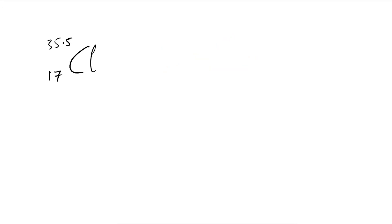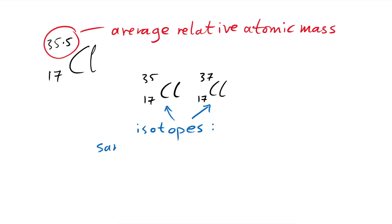The number on top, the mass number, actually gives you the average relative atomic mass. You see, there are some chlorine atoms that have a mass number of 35, but yet there are some chlorine atoms that have a mass number of 37. What are these? These are isotopes. Same element, that means the same number of protons, but different number of neutrons.